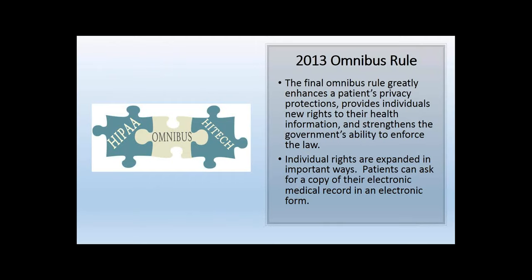The 2013 Omnibus Rule strengthened laws to govern and enforce HIPAA and expanded patients' rights to their records. For example, if a patient requests their records, by law you have up to 30 days to provide that information. New legislation coming very soon will state that if a provider has the ability to convert a record to PDF, they'll be responsible for transmitting it electronically — slowly pushing everything toward electronic transfer.